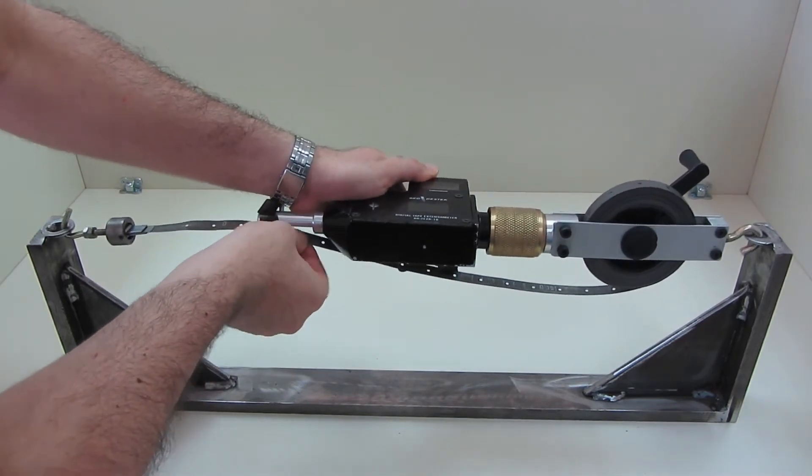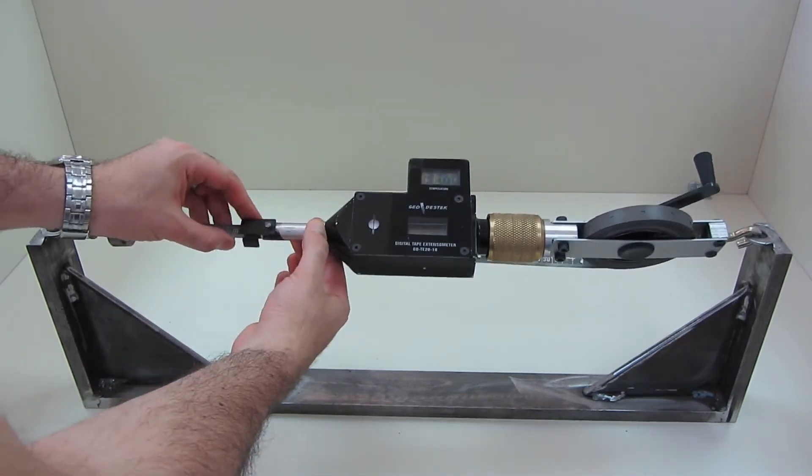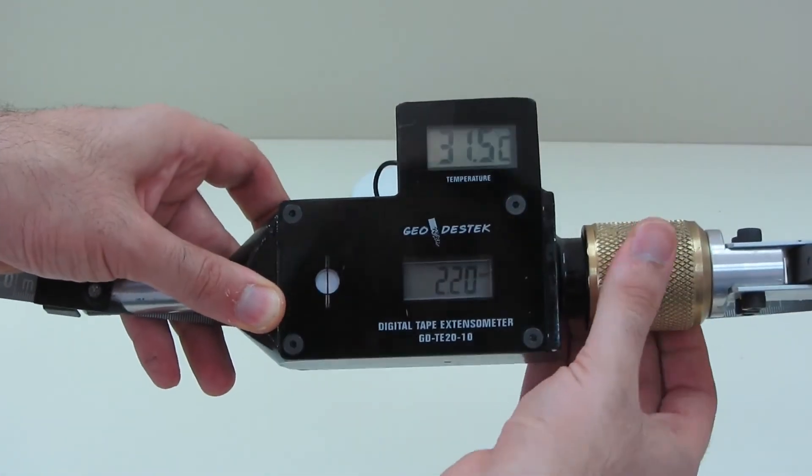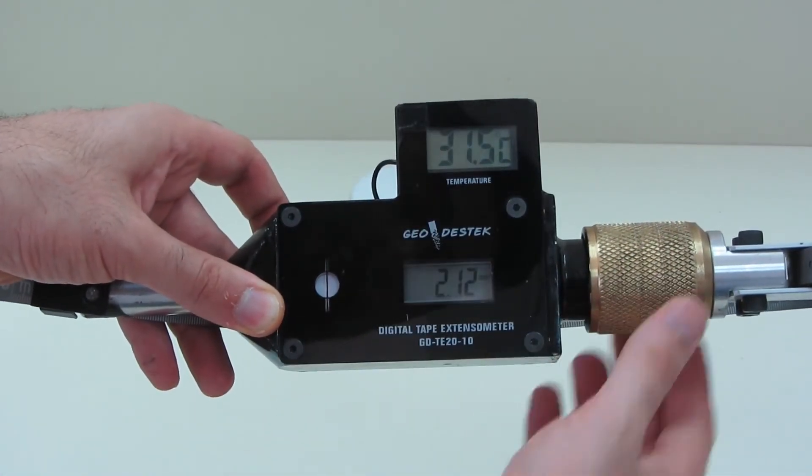By utilizing the pretensioning screw, the tape is tensioned to a standardized tightness that is optically confirmed. The opening between two reference points can be measured and recorded.